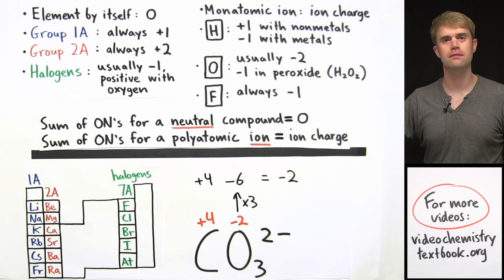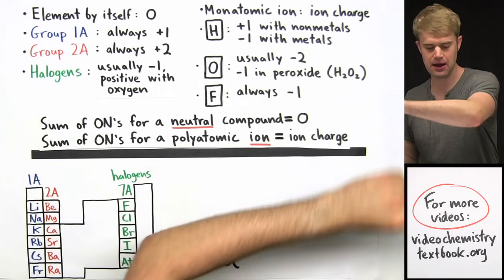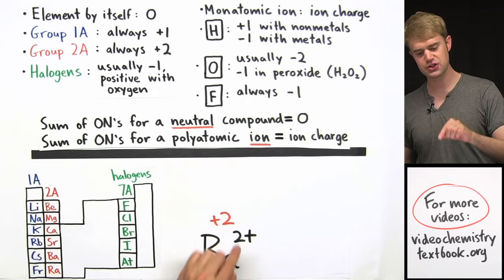Ba2+ is a monatomic ion — an ion made of only one atom — which means that its oxidation number is the same as its ion charge. So Ba2+ has an oxidation number of plus 2.